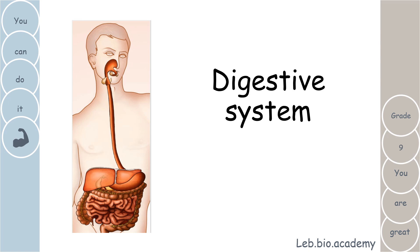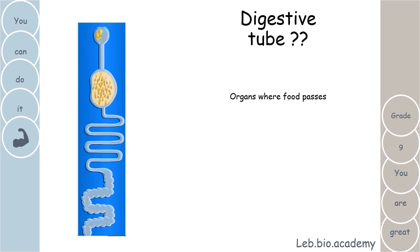So what you see now is the digestive system in the human body. The digestive system is made up of two main parts — two big parts — what we call the digestive tube and the digestive glands. The digestive tube means the organs where food passes, and all these organs are called the digestive tube.